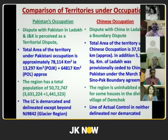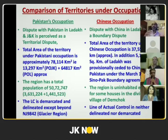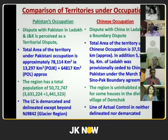With Pakistan, we have a dispute in Ladakh and Jammu perceived as a territorial dispute, because Pakistan claims virtually the entire territory. The total area under Pakistan's occupation is over 78,000 square kilometers, whereas the total area under Chinese occupation is over 37,000 square kilometers. In addition, over 5,000 square kilometers of Shaksgam Valley has been ceded by Pakistan to China under their Sino-Pak agreement of 1963.